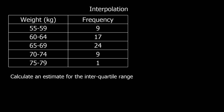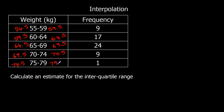We've got a similar question here, but it says calculate an estimate for the interquartile range, so this time we're going to work out the quartiles. We've got gaps between our groups which we cannot have, so we're going to change the upper and lower class boundaries. We add a cumulative frequency column: 9 plus 17 is 26, plus 24 is 50, plus 9 makes 59, plus 1 is 60.